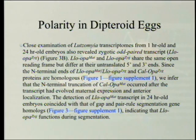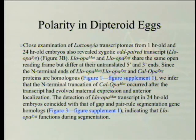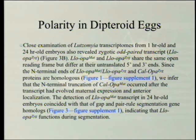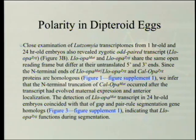In the posterior Lutzomyia embryo, the most enriched transcript was homologous to Oscar, indicating Lutzomyia eggs do contain maternal germplasm at the posterior pole, unlike Clogmia eggs. These findings suggest a broad range of moth flies use odd-paired transcripts as anterior determinant, and that maternal germplasm was lost only in the Clogmia lineage. LLO-opa-maternal and LLO-opa-zygote share the same open reading frame — producing the same protein — but differ at the untranslated five-prime and three-prime ends. The N-terminal truncation of CalOpa-maternal occurred after the transcript had evolved maternal expression and anterior localization.